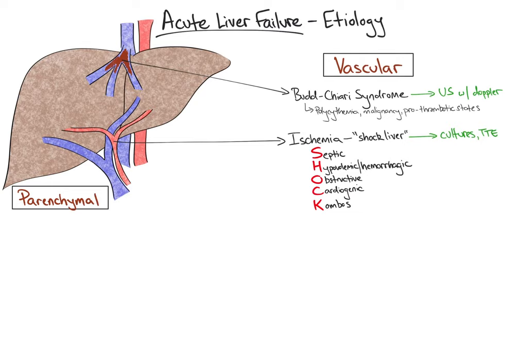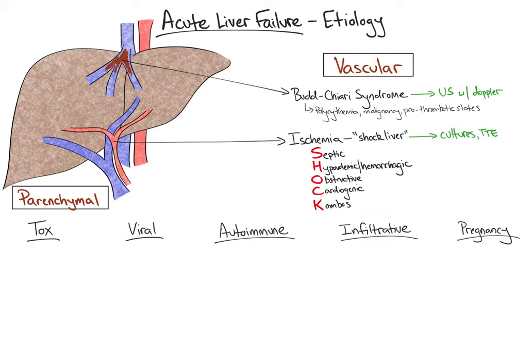Next, let's discuss the parenchymal causes of acute liver failure. The parenchymal causes can be further subdivided into five categories: tox, viral, autoimmune, infiltrative, and pregnancy. Let's go through these one by one.